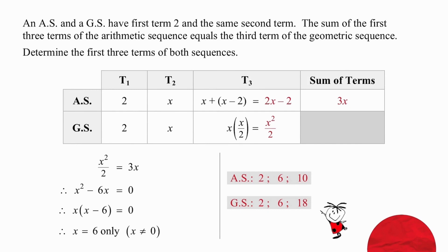To generate the third term in each sequence, we're going to use the definitions of each sequence. With the arithmetic sequence, if we subtract the first term from the second term, we get the common difference, which in this case is x minus 2. So our third term value is x plus that common difference, which gives us a third term value of 2x minus 2. If we add the first term, the second term and the third term, we get a sum of those three terms equal to 3x.